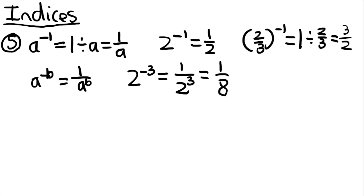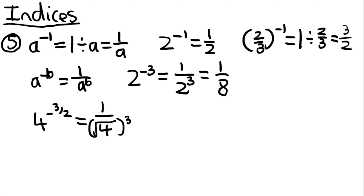When you mix minuses and fractions together in indices, the best way to deal with it is to take it slowly. For example, 4 to the power of minus 3 over 2: the minus causes it to be 1 over 4, the denominator 2 causes the root, and the 3 causes it to cube everything on the bottom. So it becomes 1 over (√4)^3, which is 1 over 2 cubed, which equals 1 over 8.